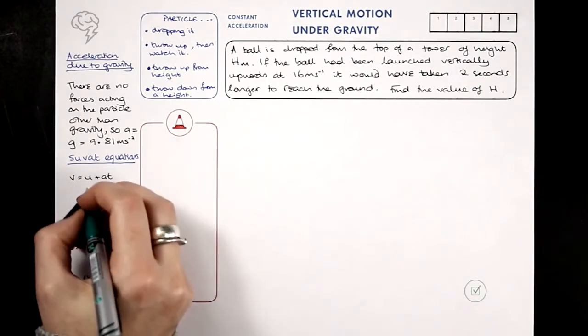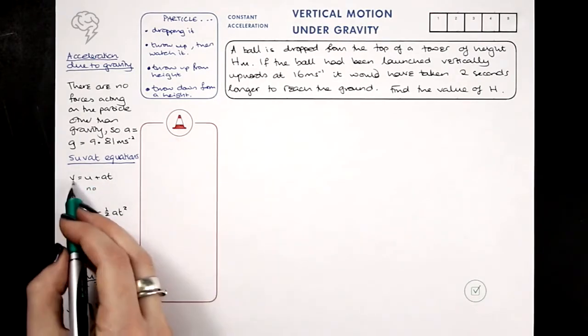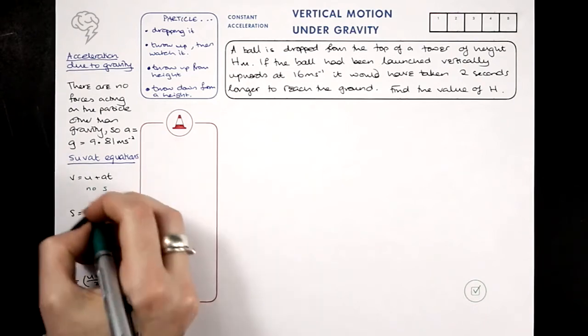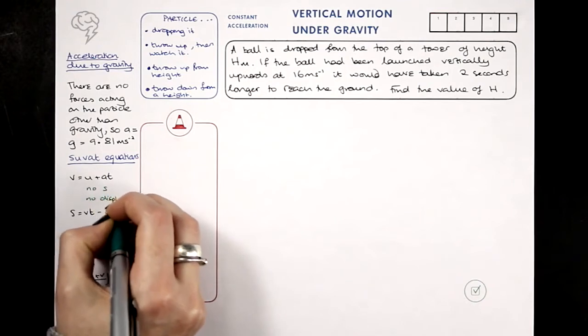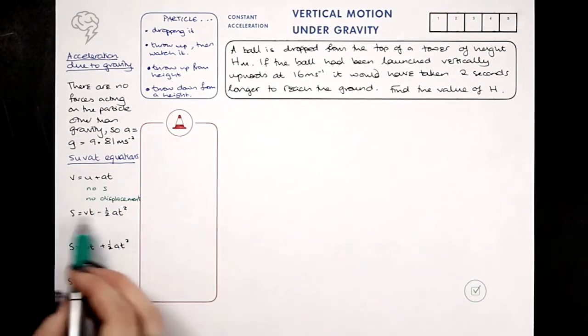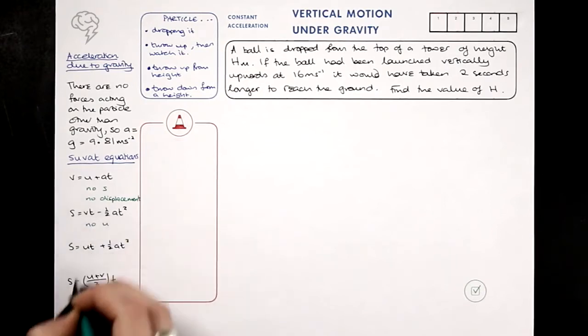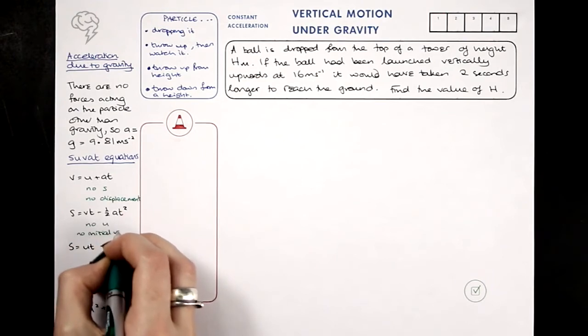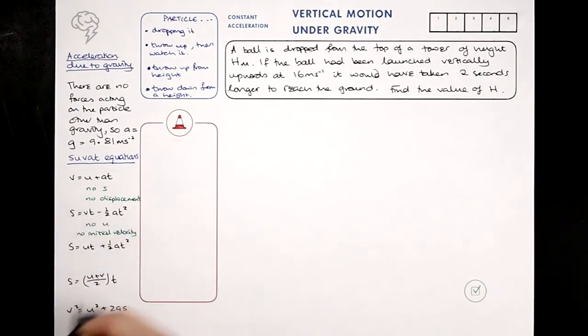This equation here has got no S in it, no displacement. So if we're not interested in displacement, that's the letter S, we can use this equation. This equation has got no U, U is the initial velocity, so if we don't know and don't care, then we'd use that equation.